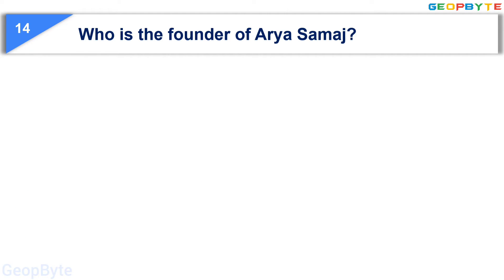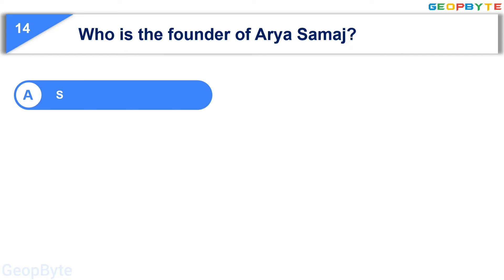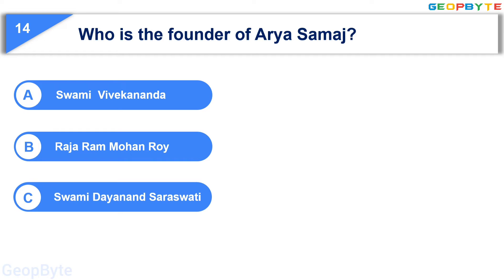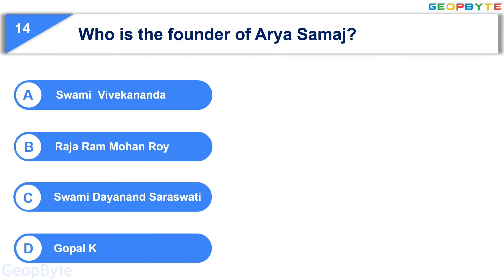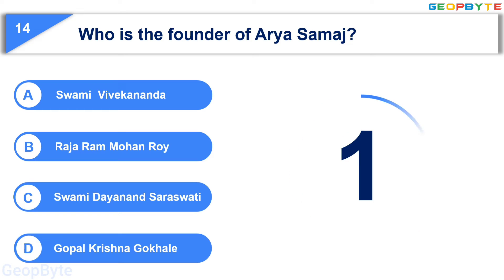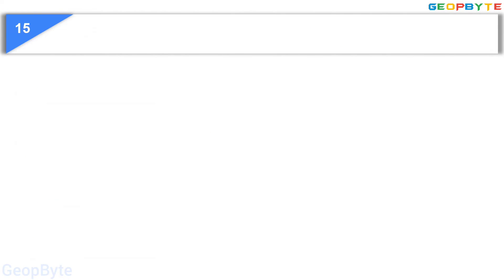Moving to the fourteenth question: who is the founder of Arya Samaj? Option A: Swami Vivekananda, Option B: Raja Ram Mohan Roy, Option C: Swami Dayanand Saraswati, Option D: Gopal Krishna Gokhale. Your time starts now. Your time is up and the correct answer is Option C: Swami Dayanand Saraswati.